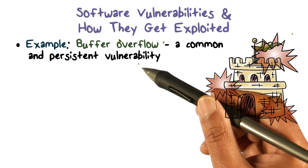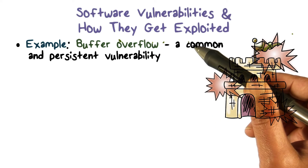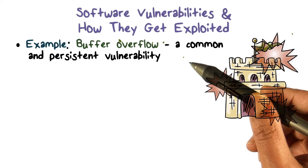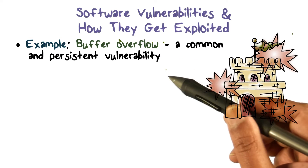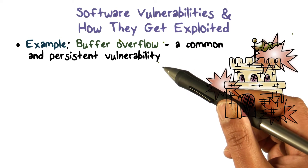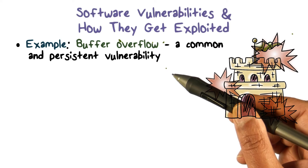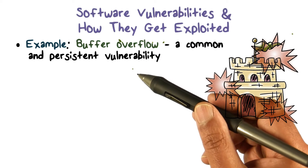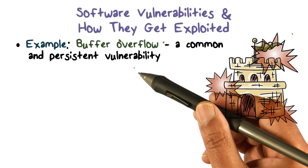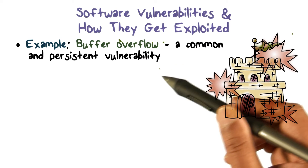An attacker is actually able to exploit a program by inserting new code, sometimes in a certain part of memory, and then directing or transferring control of that code to the instructions that the attacker has introduced in that memory.